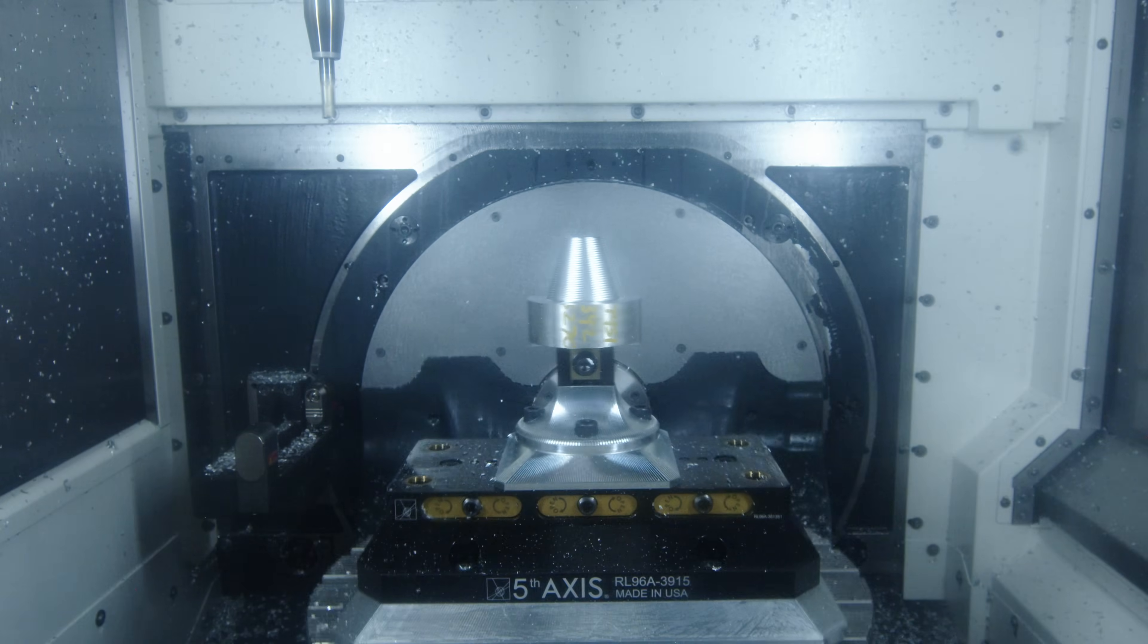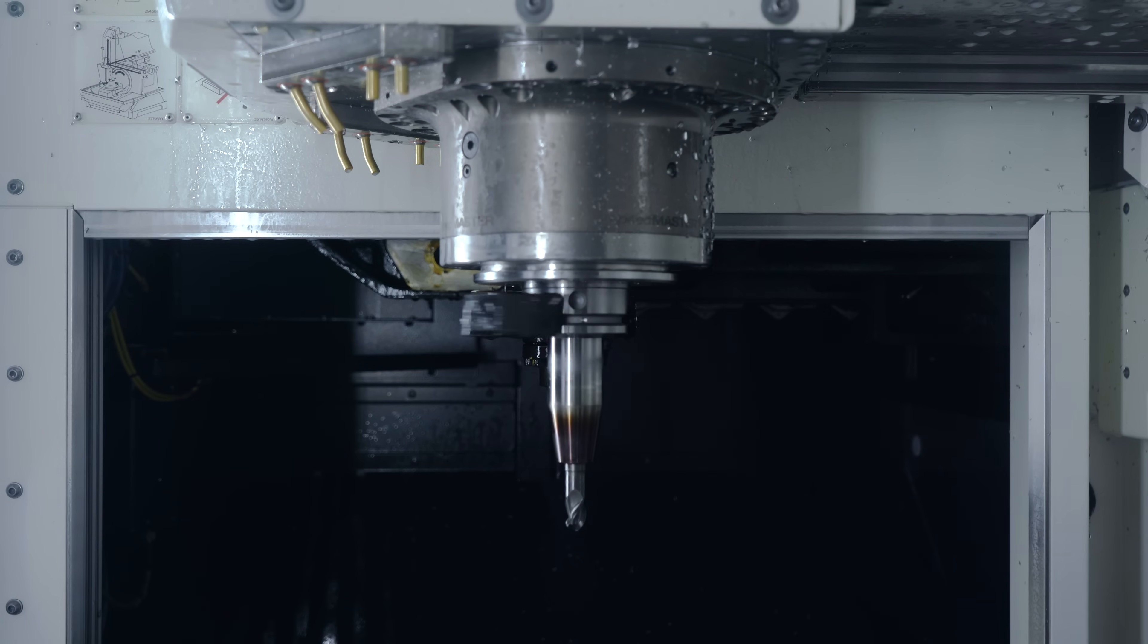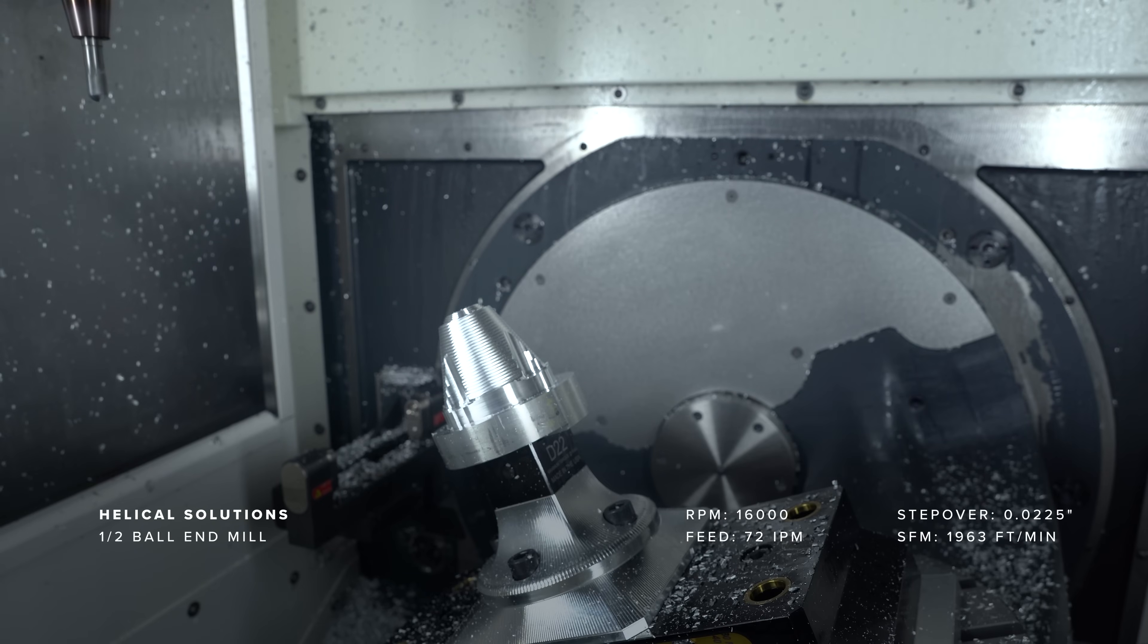Then it's on to 3D surfacing with a half inch three flute ball end mill at 16,000 rpm, finishing the part at a 25 degree angle.